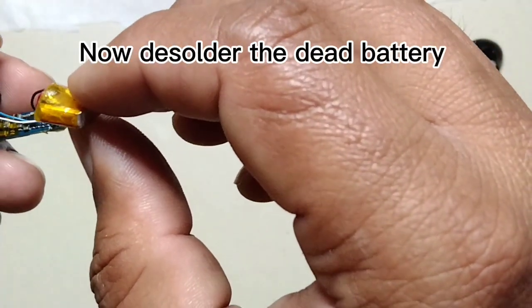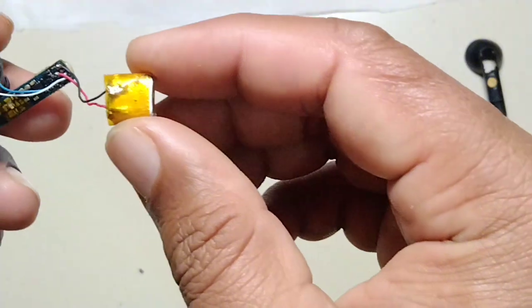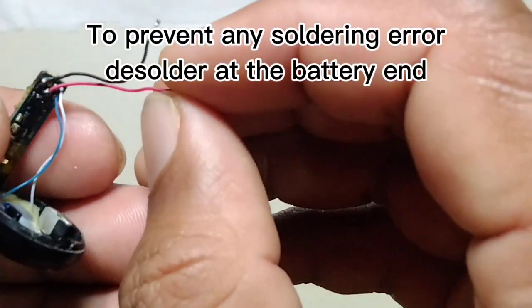Now desolder the dead battery. To prevent any soldering error, desolder at the battery end.